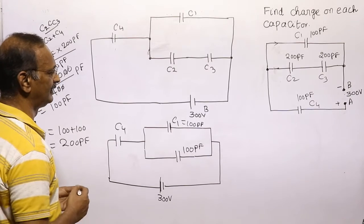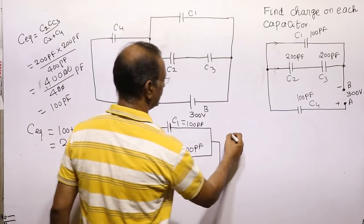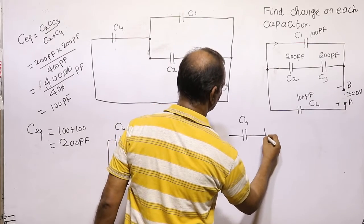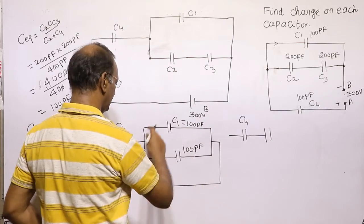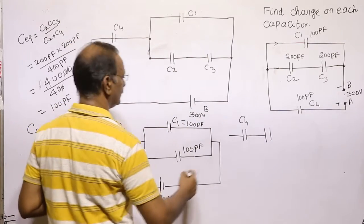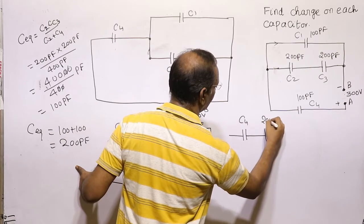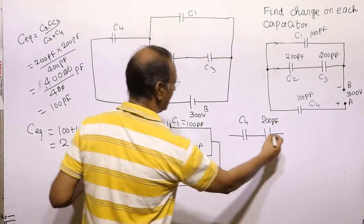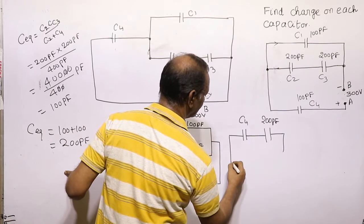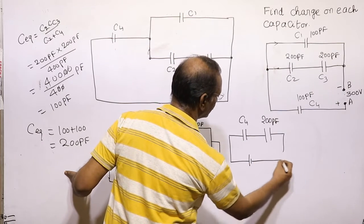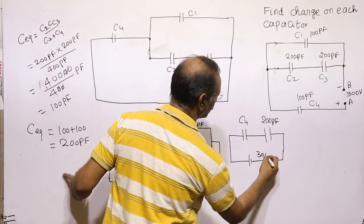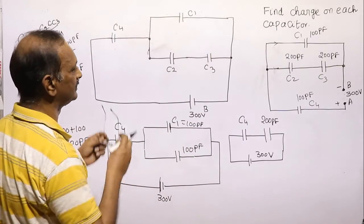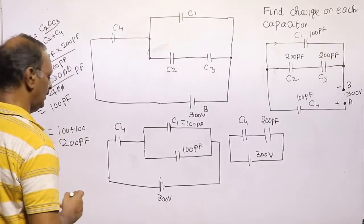This circuit can now be drawn as 200 picofarad in series with C4, connected across 300 volts. C4 is equal to 100 picofarad.